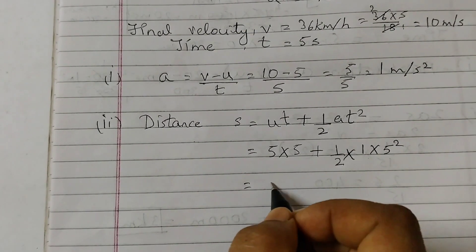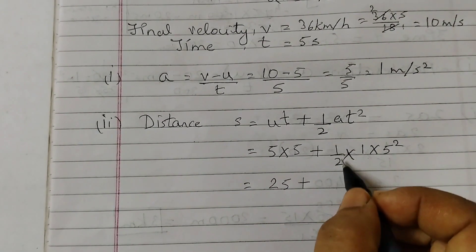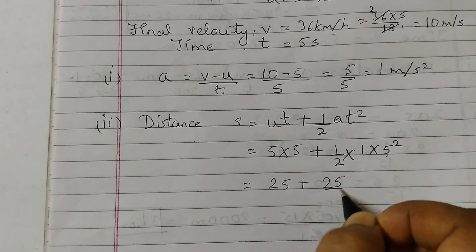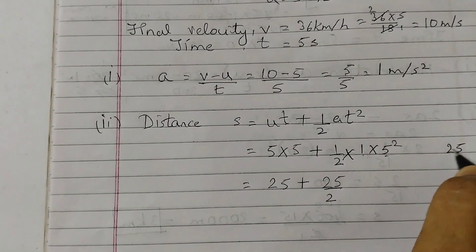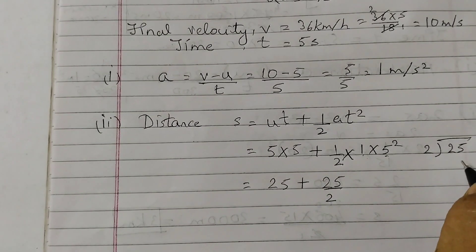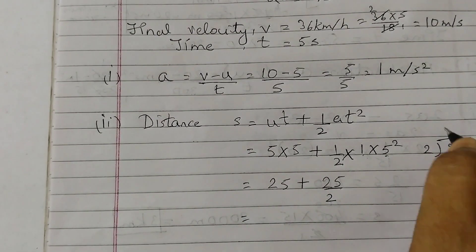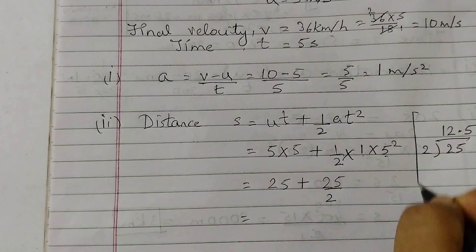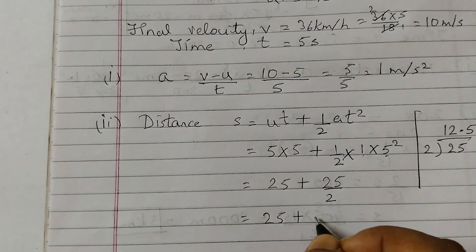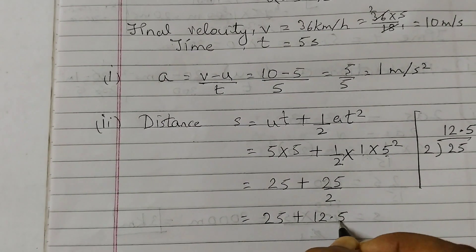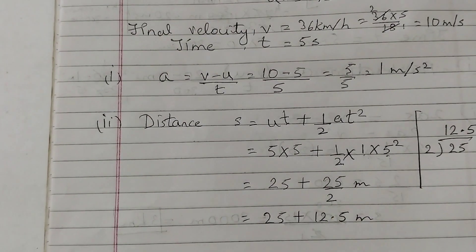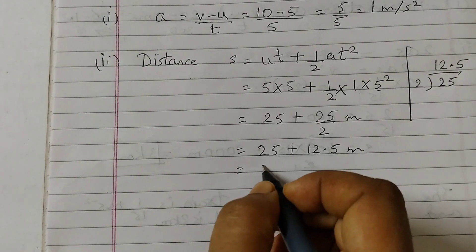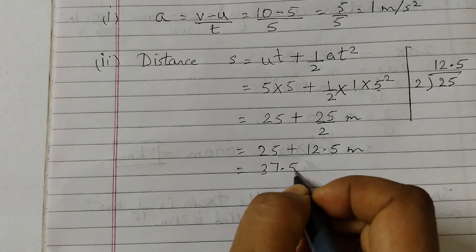Simplifying: 5 into 5 is 25, plus half into 1 is one half, and 5 squared is 25. So this gives us 25 divided by 2, which is 12.5. Therefore it's 25 plus 12.5, and since distance is measured in meters, the final answer is 37.5 meters.